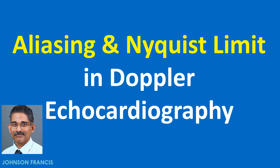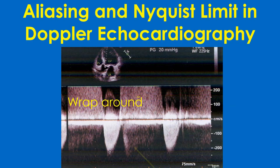Aliasing is a phenomenon in pulsed Doppler echocardiography in which, when the velocity exceeds a particular limit known as the Nyquist limit, the direction of flow is depicted as opposite to the actual one. The Nyquist limit is half the pulse repetition frequency of the ultrasound signal emitted by the Doppler transducer.